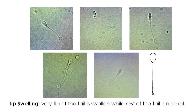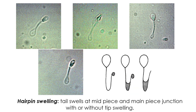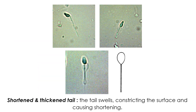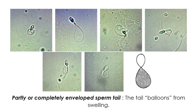Tip swelling is where only the very tip of the tail is swollen and the rest is normal. Hairpin swelling is where the tail swells at the mid-piece and main-piece junction, with or without tip swelling. Shortened and thickened tail is where the tail swells, constricting the surface and causing shortening. Partly or completely enveloped sperm tail is where the tail balloons extensively from swelling.